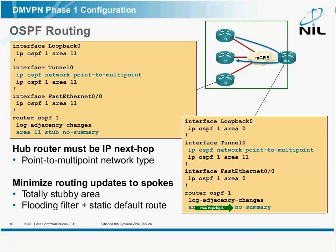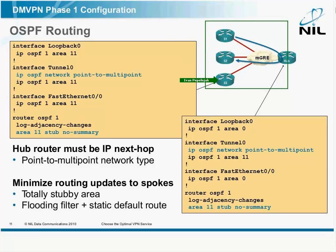With this parameter, the hub router is just advertising the default route into the DMVPN network, and the spokes advertise their networks and they get propagated to other spokes. That's how OSPF works. But you get no routes beyond the hub router, so the amount of information exchanged is minimized.